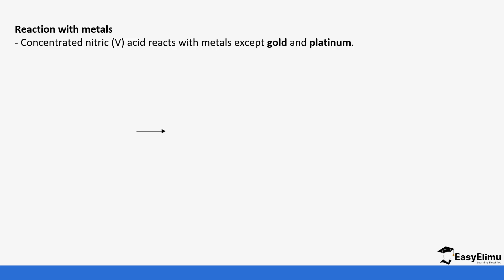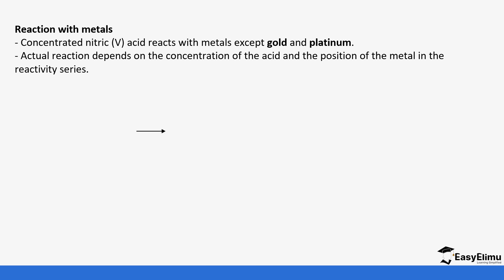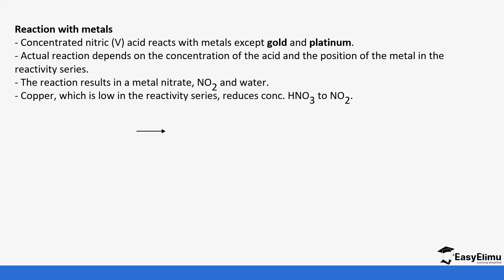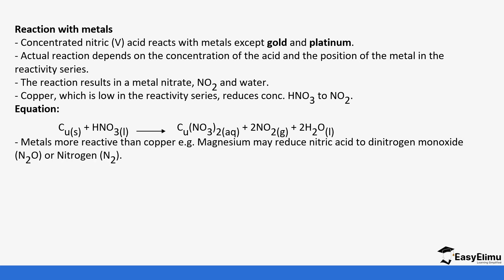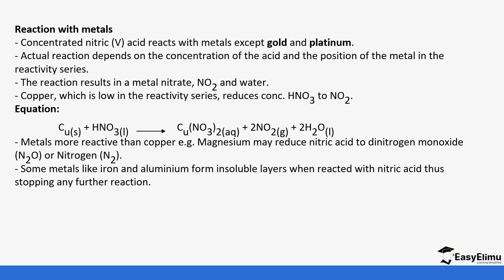Nitric acid reacts with metals. Concentrated nitric acid reacts with all metals except gold and platinum. The reaction depends on the concentration of the acid, but the products are always a salt of nitrate, nitrogen dioxide, and water. Copper reduces nitric acid to nitrogen dioxide and water, and itself reacts to form copper nitrate. Metals more reactive than copper, like magnesium, may reduce nitric acid to nitrogen monoxide. Some metals like iron and aluminum form insoluble layers when reacted with nitric acid, stopping any further reaction.